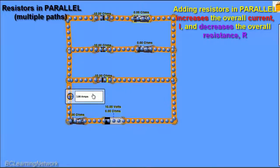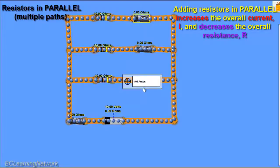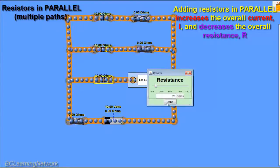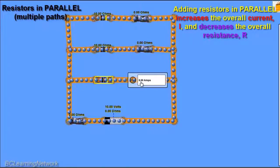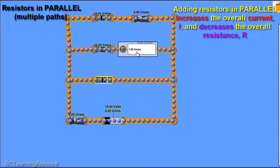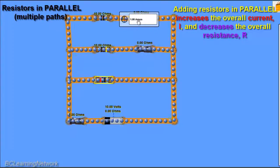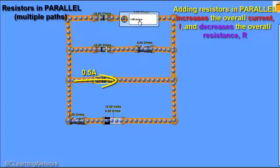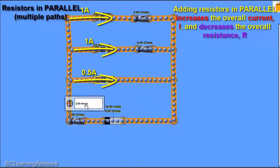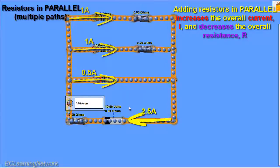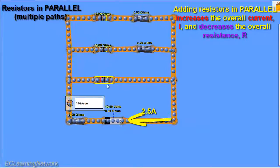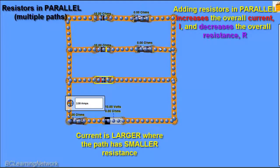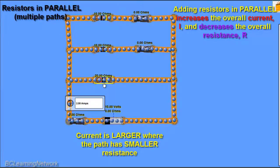Now what happens if I change one of the resistance values? Currently they all have one amp flowing through them. Let's double one resistor — I'm going to make it 20 ohms. Notice its current is now only 0.5 amps. The current in the next one is still 1 amp, and the current in the next one is still 1 amp. So the overall current is 1 amp through the top, 1 amp through the middle, and 0.5 amps through the bottom one — giving us 2.5 amps overall. The resistors don't have to be identical; the current will follow the path of least resistance. More current will flow through the two 10 ohm resistors than through the 20 ohm resistor.